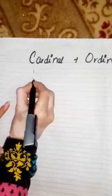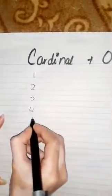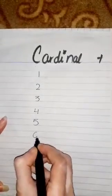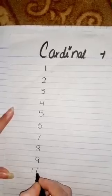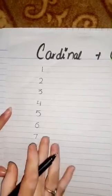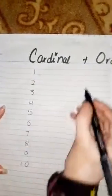First, before proceeding to ordinal numbers, I write here number 1, 2, 3, 4, 5, 6, 7, 8, 9, and 10. These numbers are called cardinal numbers.